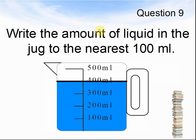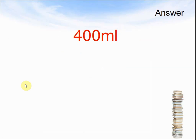Question 9. Write the amount of liquid in the jug to the nearest 100 millilitres. Pause the video until you are ready to work out the answer. The answer was 400 millilitres.